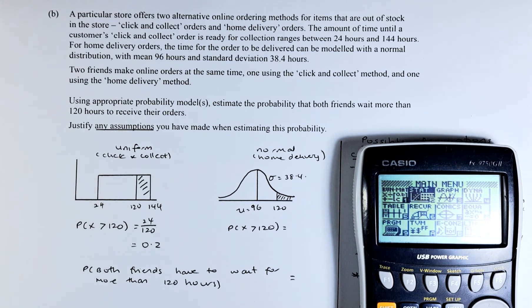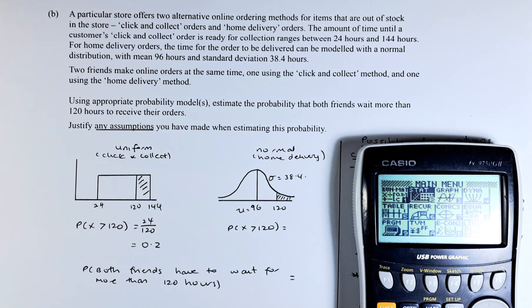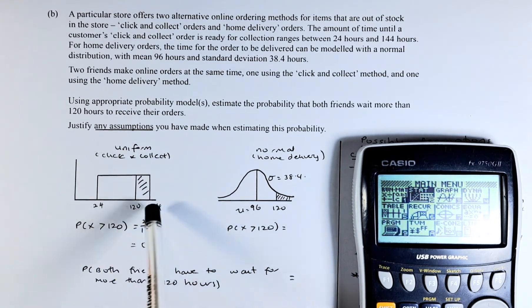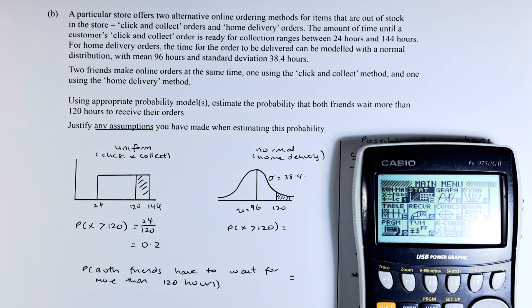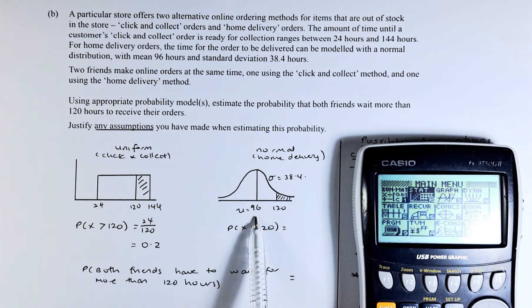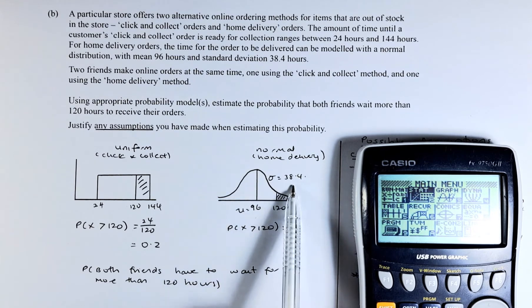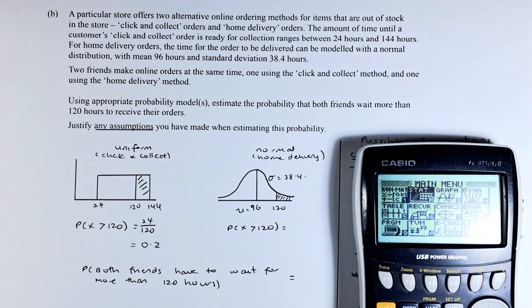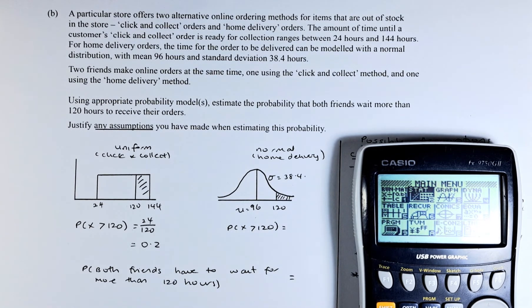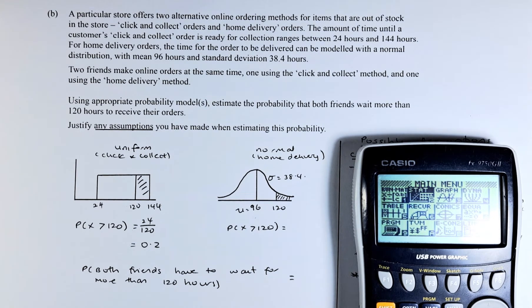The time until a customer's click and collect order is ready for collection ranges from 24 hours to 144 hours, so it's a uniform distribution. For home delivery, the time for the order to be delivered can be modeled with a normal distribution with mean μ = 96 and σ = 38.4. Two friends make online orders at the same time, one using click and collect method and the other using home delivery.